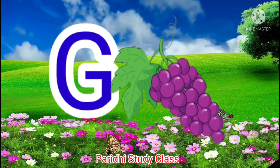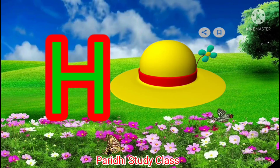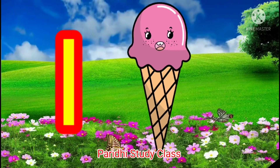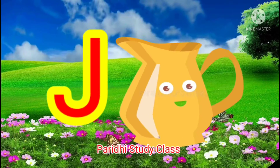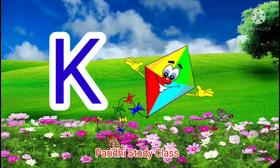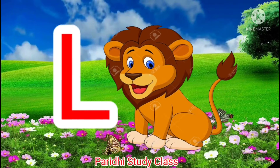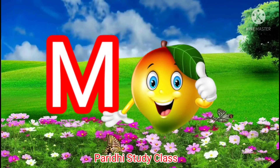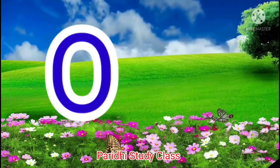G for grapes, H for hat, I for ice cream, J for jug, K for kite, L for lion, M for mango, N for nest.